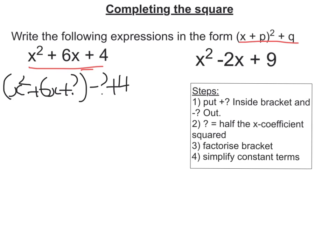Next our next step says we half the x coefficient and square it and that's our question mark. Well the x coefficient is just the number in front of x so half 6 is 3, square it is 9. So let's put in our 9.